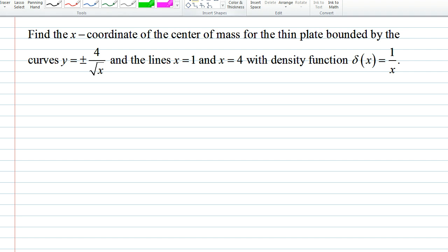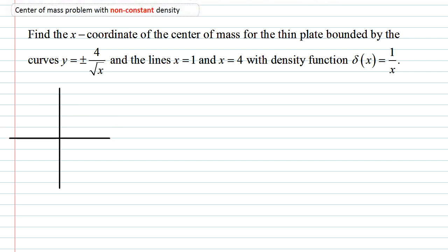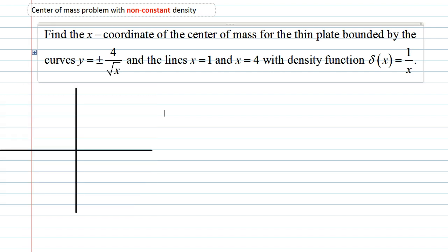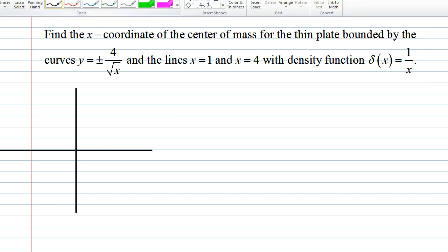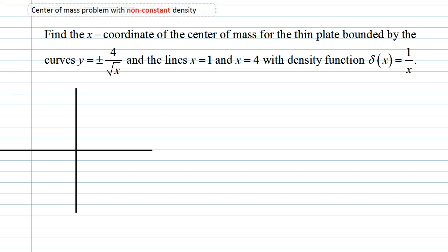We want to be able to know what this function looks like. 4 over root x, the graph of it looks a lot like the graph of 1 over x. So we'll draw that curve for 1 over x and we're just going to have this kind of a shape here. That's the graph, we'll call it the graph of y equals 4 over root x.